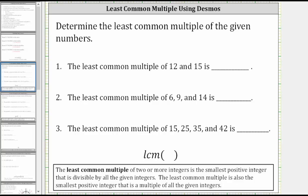This lesson will show how to determine the least common multiple of a given set of numbers using desmos.com. The least common multiple of two or more integers is the smallest positive integer that is divisible by all of the given integers. The least common multiple is also the smallest positive integer that is a multiple of all of the given integers.